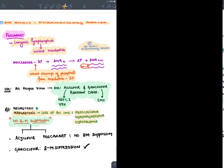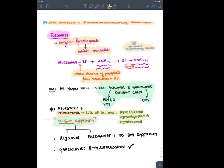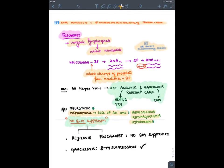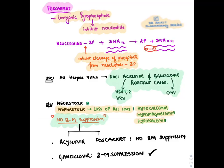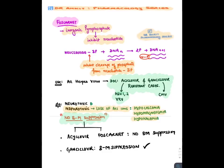Foscarnet is given in resistant cases of Acyclovir and Ganciclovir. It is an inorganic pyrophosphatase analogue that inhibits the conversion of nucleotide-3-phosphatase attachment to DNA. It is active against all herpes group viruses. Its side effects include neurotoxicity and nephrotoxicity — like Acyclovir but NOT bone marrow suppression. In nephrotoxicity it causes loss of all ions: hypocalcemia, hypomagnesemia, and hypokalemia.